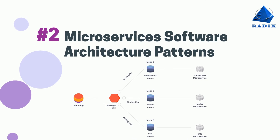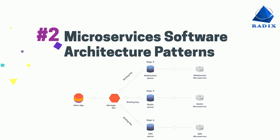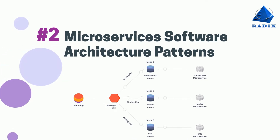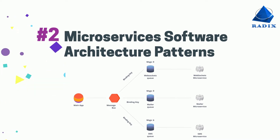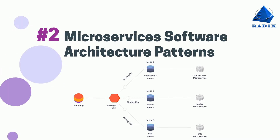Number 2: Microservices Software Architecture Patterns. Microservices architecture has each component of the system working individually and fosters independent communication with the others.